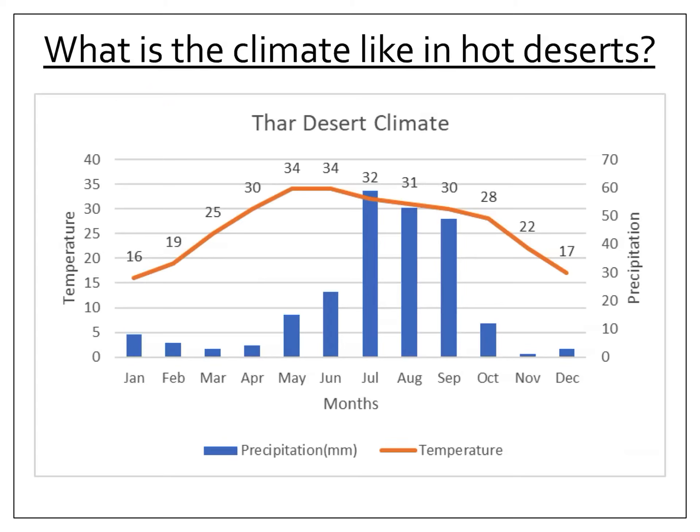So what is the climate like in hot deserts? This is an example of a climate graph for the Tar Desert, and it's really important that we are able to understand what the graph is showing. Along the bottom axis we can see the months — January, February, March, April, etc. On the left-hand side we can see the temperature, and on the right-hand side we can see the precipitation. The precipitation is shown on the graph as the blue bars.